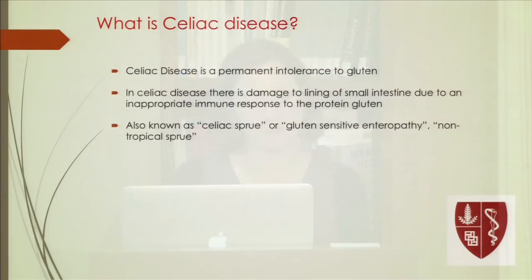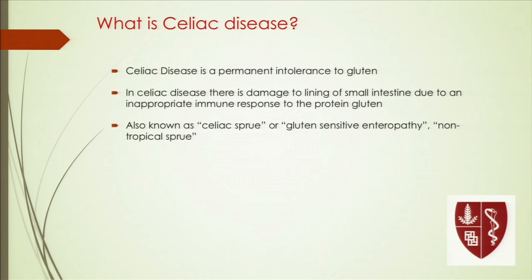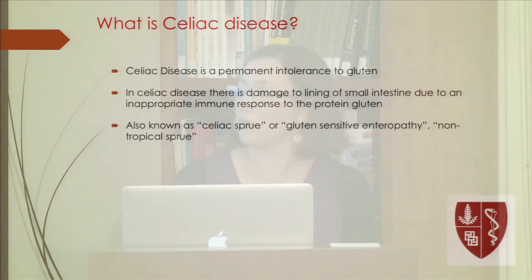So what is celiac disease? We'll begin with some definitions. Celiac disease is a permanent intolerance to gluten in which there is damage to the lining of the small intestine, secondary to an inappropriate immune response to gluten. It's also called celiac sprue, gluten-sensitive enteropathy, and non-tropical sprue.